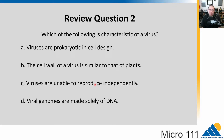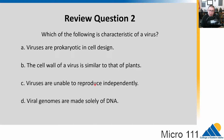The cell wall of a virus is similar to that of plants — again, viruses don't have a cell wall because they're not made of cells, so that one's out. C, viruses are unable to reproduce independently — that is true. And D, viral genomes are made solely of DNA — this one's partially correct, but viral genomes could be made solely of RNA. There are DNA viruses and RNA viruses. So the best option here would be C.